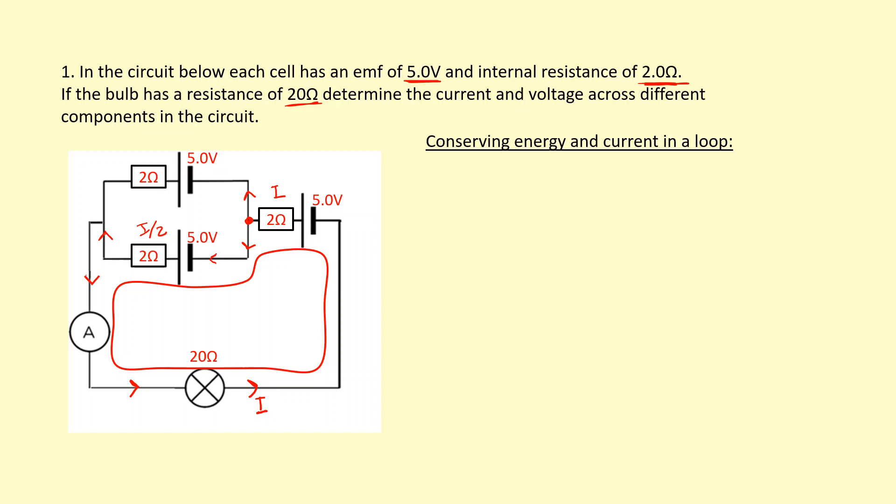Now I'm going to think about the energy gained. The total energy gained: first it gains energy when it goes across this cell, gaining 5 volts, then it goes to the bottom branch and gains another 5 volts. So total energy gained is 10 joules per coulomb.